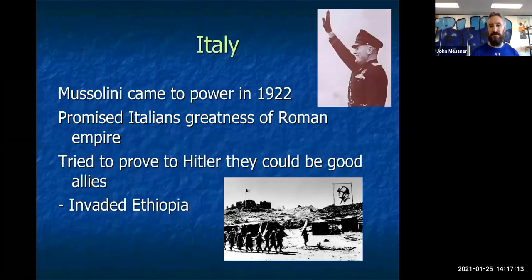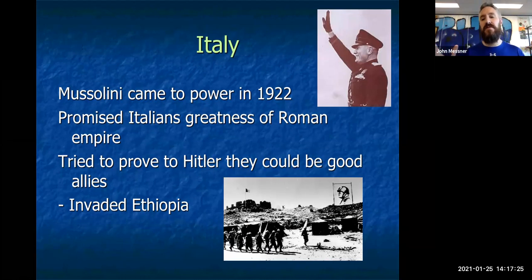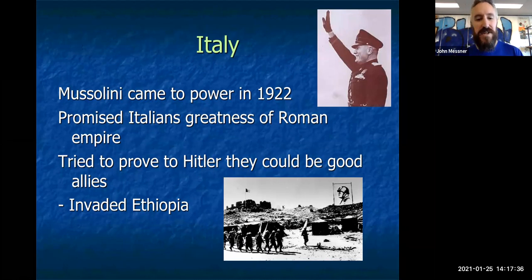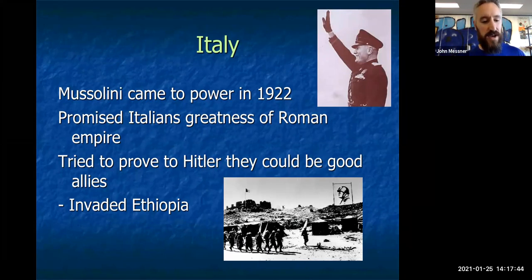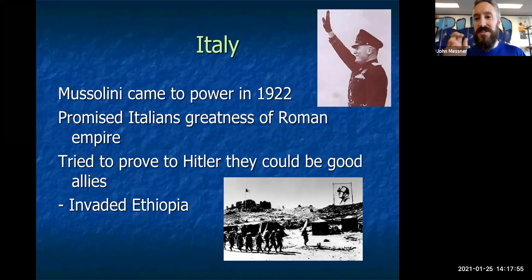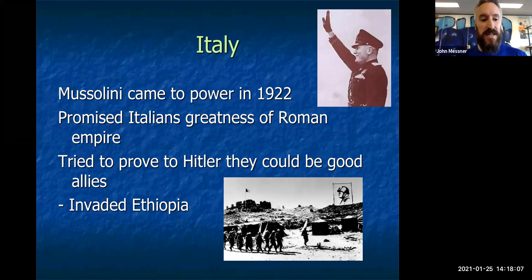Italy is going through something similar, where Mussolini takes power in 1922, declares himself emperor, and promises Italians the greatness of the Roman Empire again. He's always trying to prove to Hitler that they're good friends and allies — like the little brother saying, 'Hey, wait up, I'm coming with you.' He invades Ethiopia, which they occupy for about 15 years. I've actually been to Ethiopia — you see local Ethiopian food right next to Italian restaurants, because the Italians colonized Ethiopia before being booted out in the 1940s.